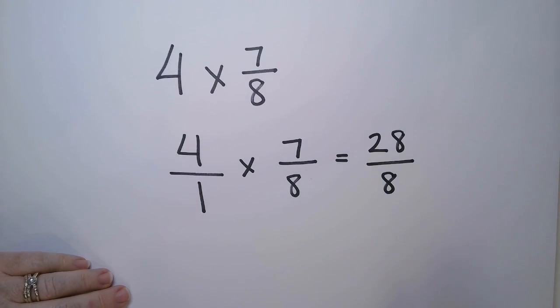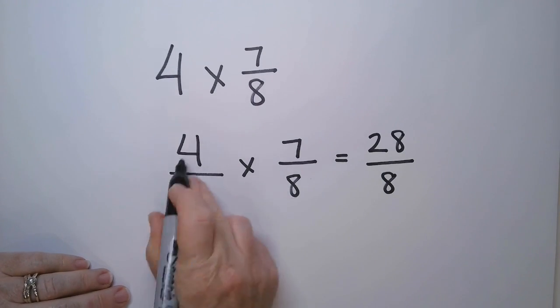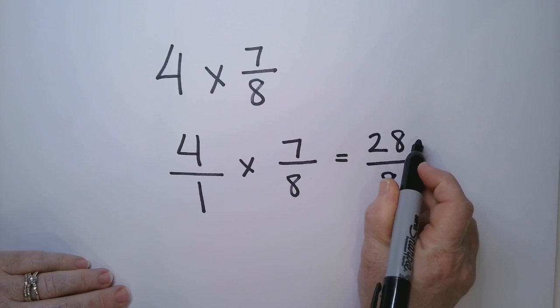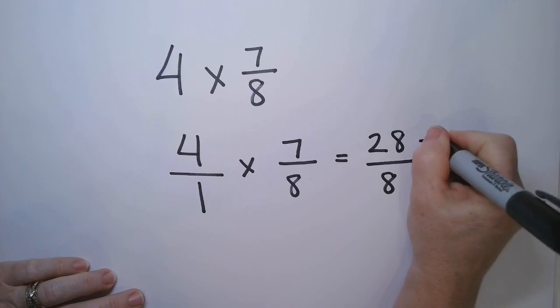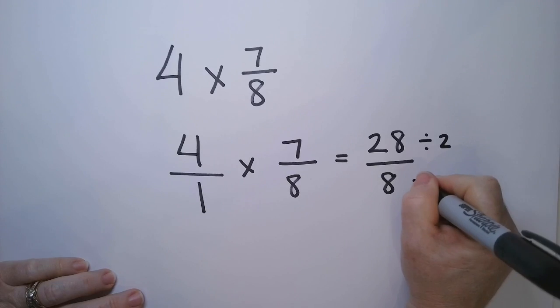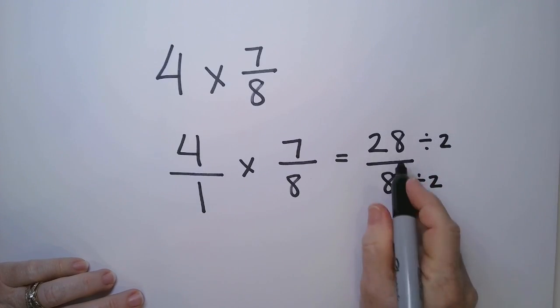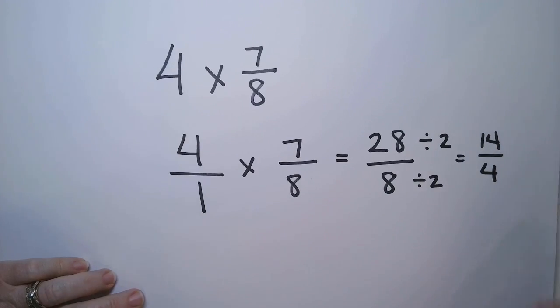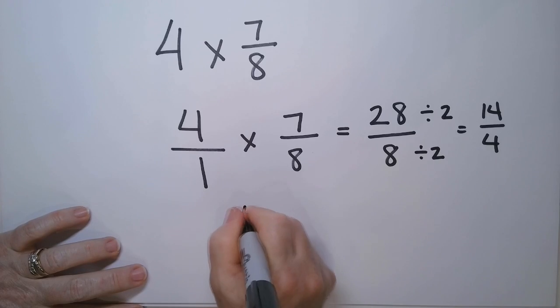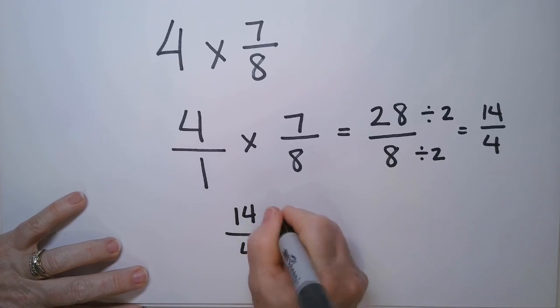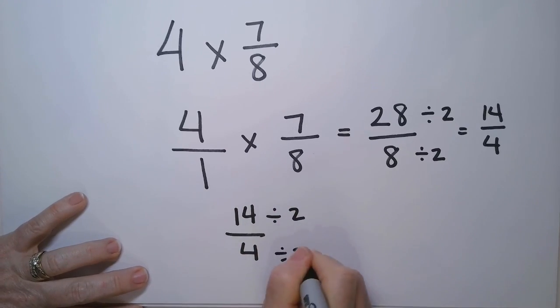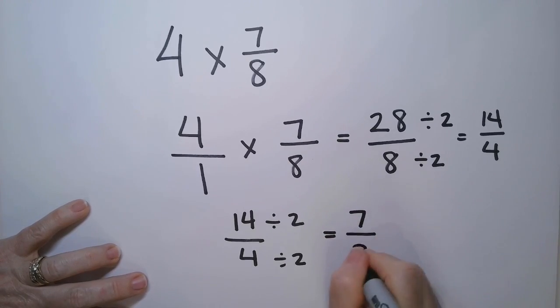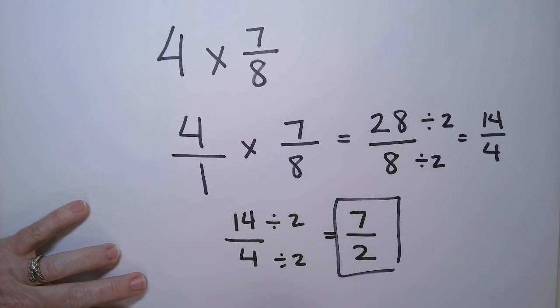If you'd like to reduce it, you can do it either before you multiply or after. Let's try this one after. So I'm going to divide top and bottom by 2, because I see that they're both even numbers. So this is 14 over 4. Oh, I can reduce it again, can't I? So 14 over 4, divide by 2, divide by 2. And now I have 7 over 2. And there is my final answer.